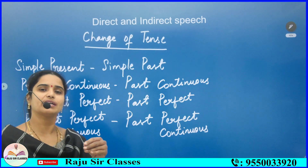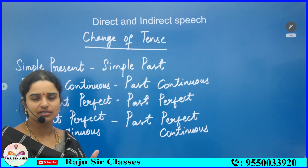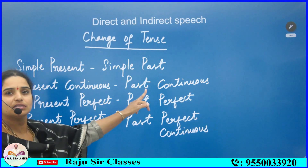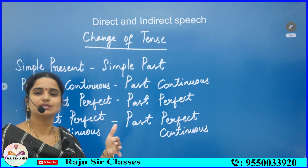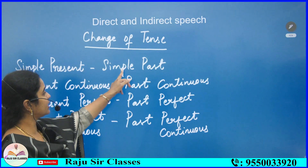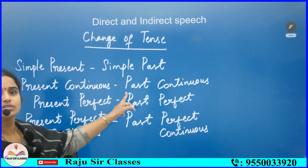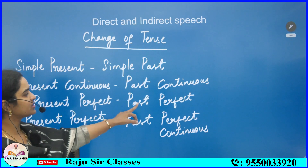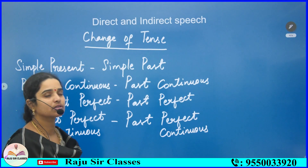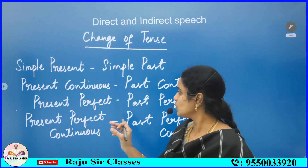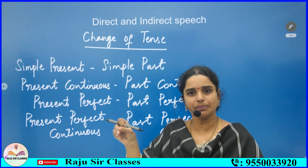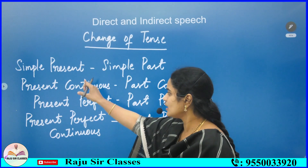When changing from direct to indirect speech, the tense must change. Simple present changes into simple past. Present continuous changes into past continuous. Present perfect changes into past perfect. Present perfect continuous changes into past perfect continuous. So all present forms are changed into past forms.